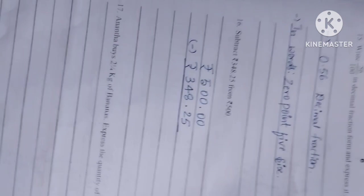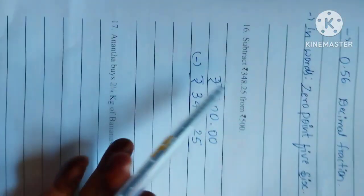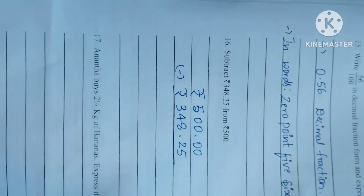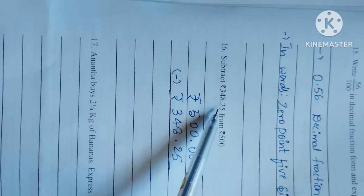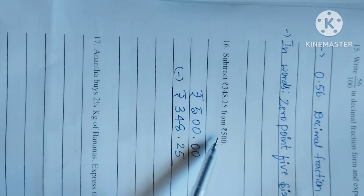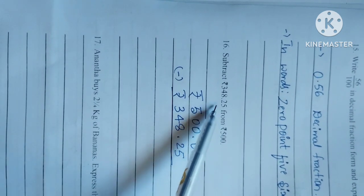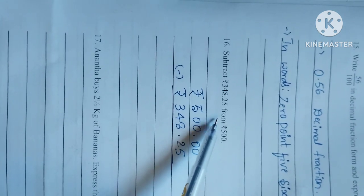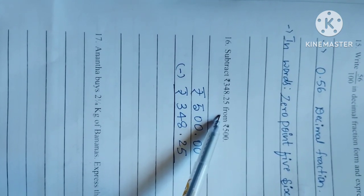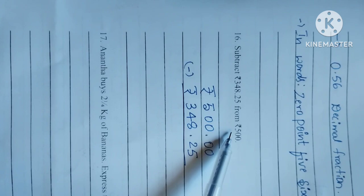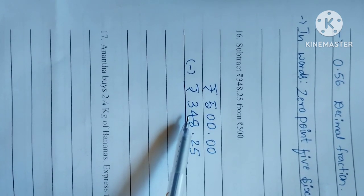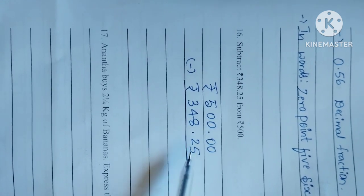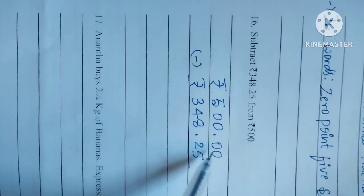The 16th question says: subtract rupees 348.25 from 500. First, you want to write it as 500 minus 348.25. So we can write now: 500.00 minus 348.25.